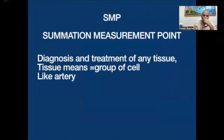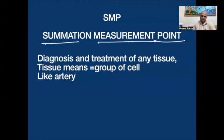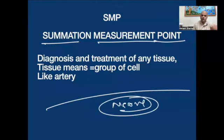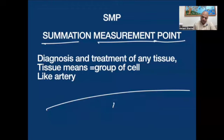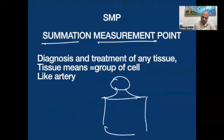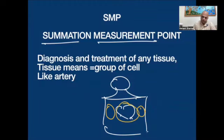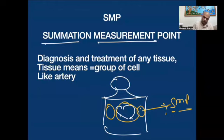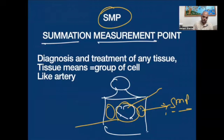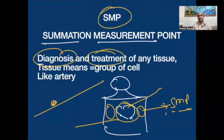The meaning of SMP point — summation measurement point — suppose there is a chest cavity. In the chest cavity we are having heart, lungs, and pericardium. We are having one SMP point for the lung, which is very good for the lung and will treat the lung. One point for the heart, which will treat the heart. One point for the pericardium. So SMP point means in every meridian we are having one point, which is very good for diagnosis and treatment. That is called the SMP point.